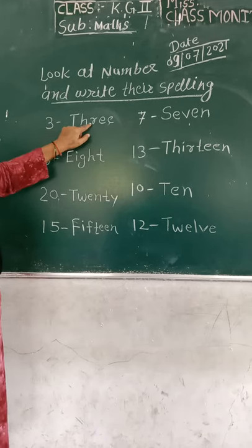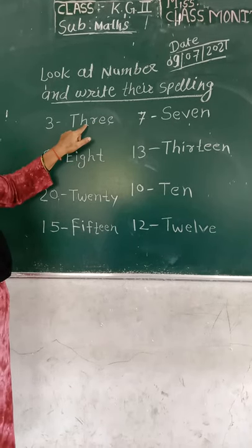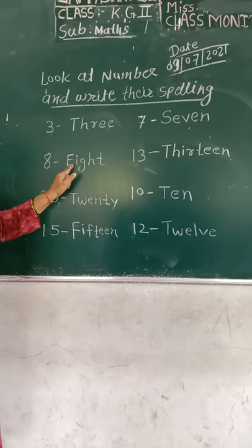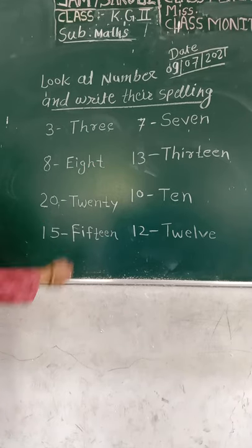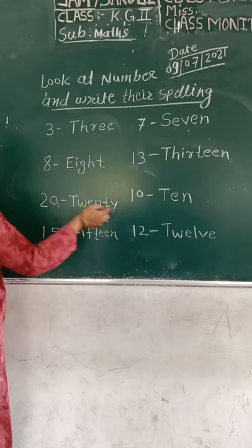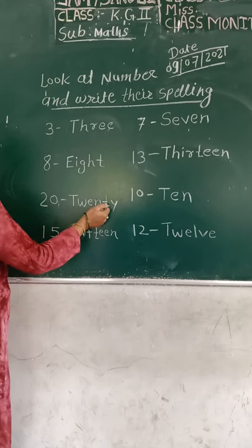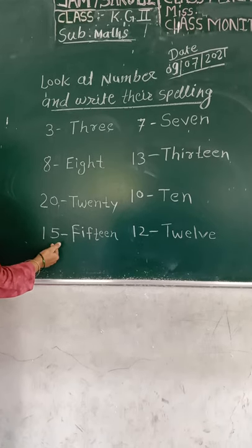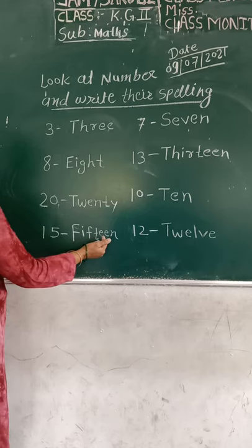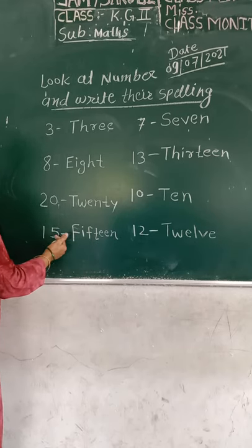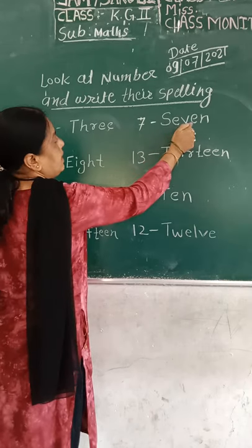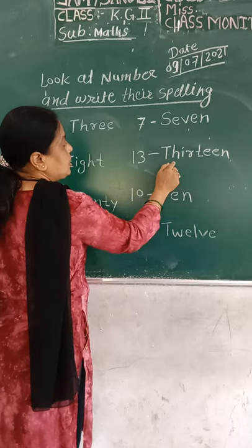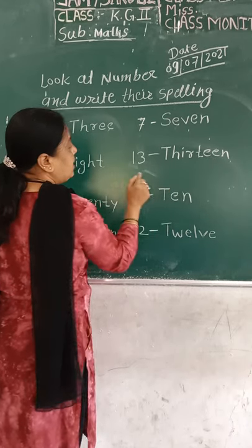T-W-E-N-T-Y, twenty. F-I-F-T-E-E-N, fifteen. S-E-V-E-N, seven. T-H-I-R-T-E-E-N, thirteen.